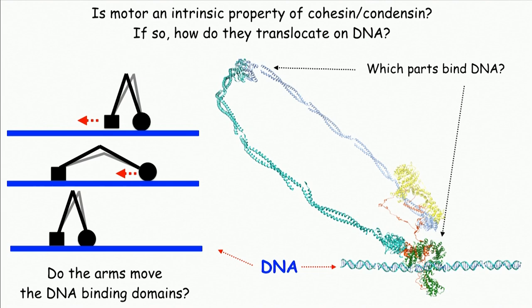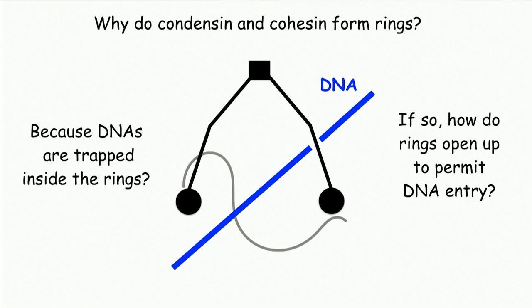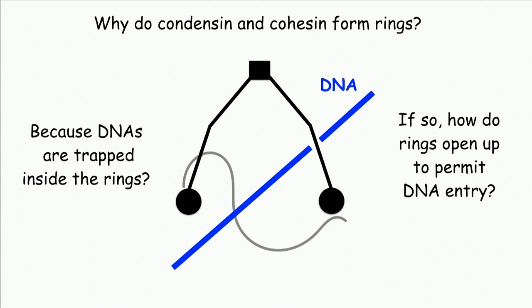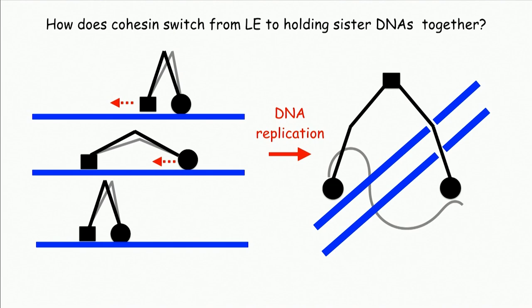Another thing we cannot explain: if condensin and cohesin are doing loop extrusion, why do they form rings? Does that mean the DNAs are topologically trapped inside those rings during this process, and if so, how do the rings open up to get the DNAs inside? And whereas both cohesin and condensin are walking along DNA according to the loop extrusion hypothesis, we believe that sometimes during replication the sister DNAs are trapped inside the same cohesin ring — that's how sister DNAs are held together. So how does cohesin switch between these two activities upon chromosome replication?